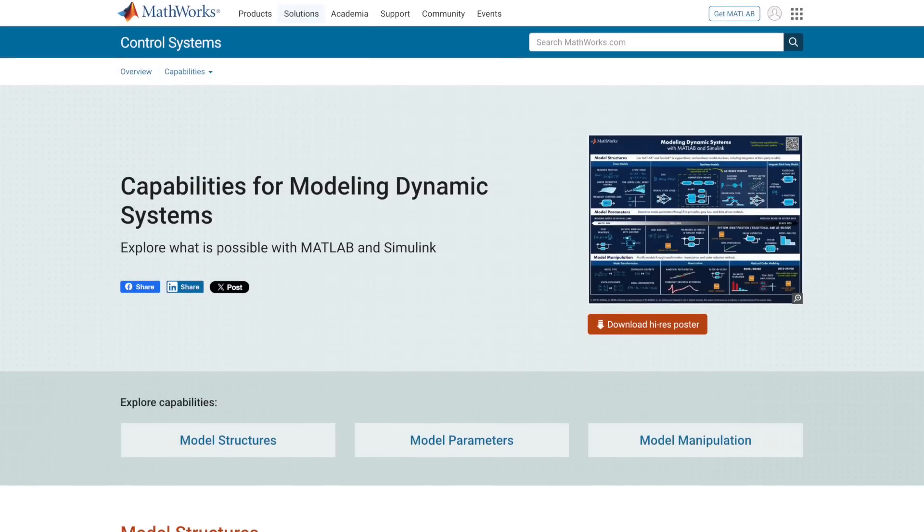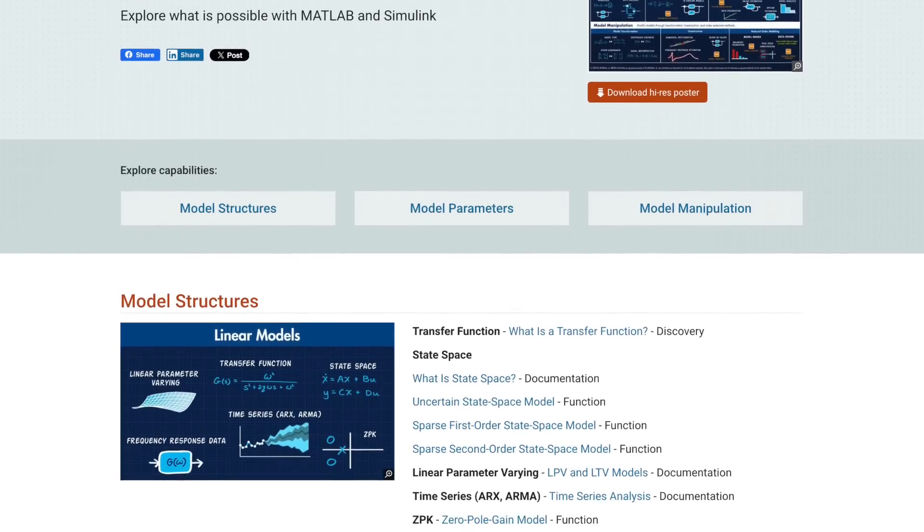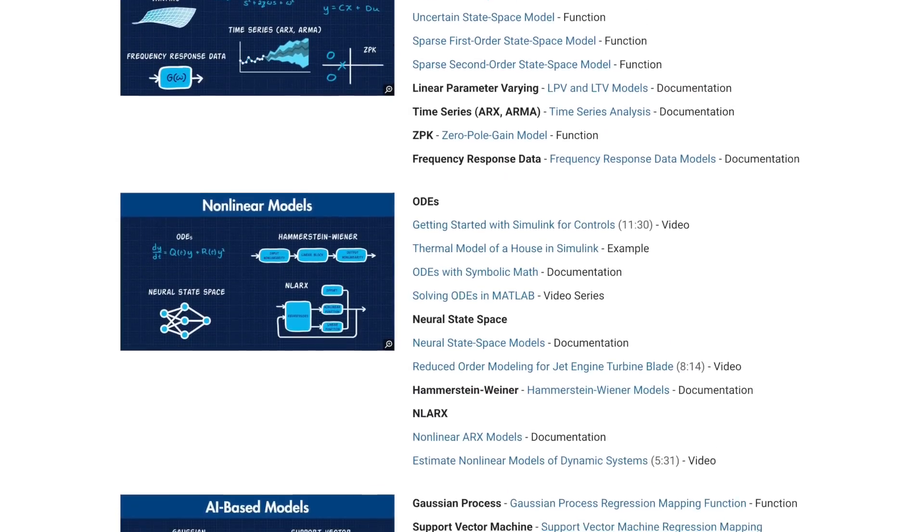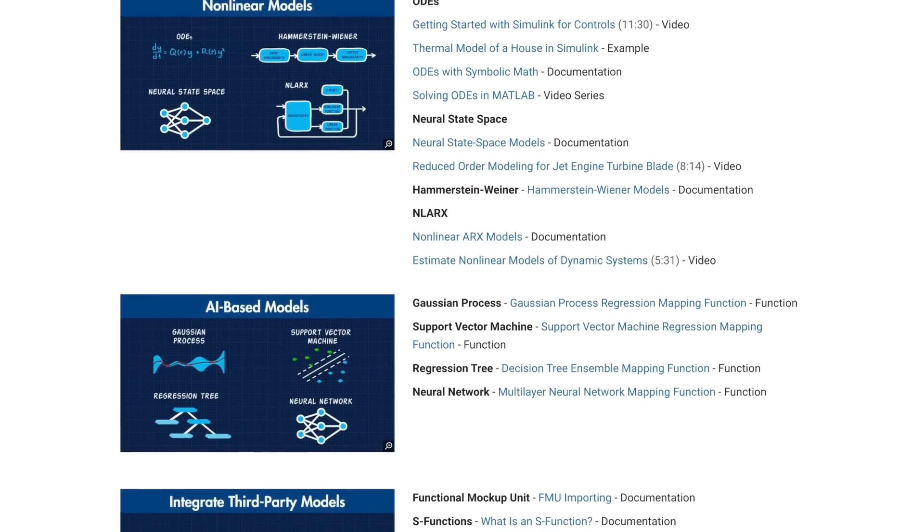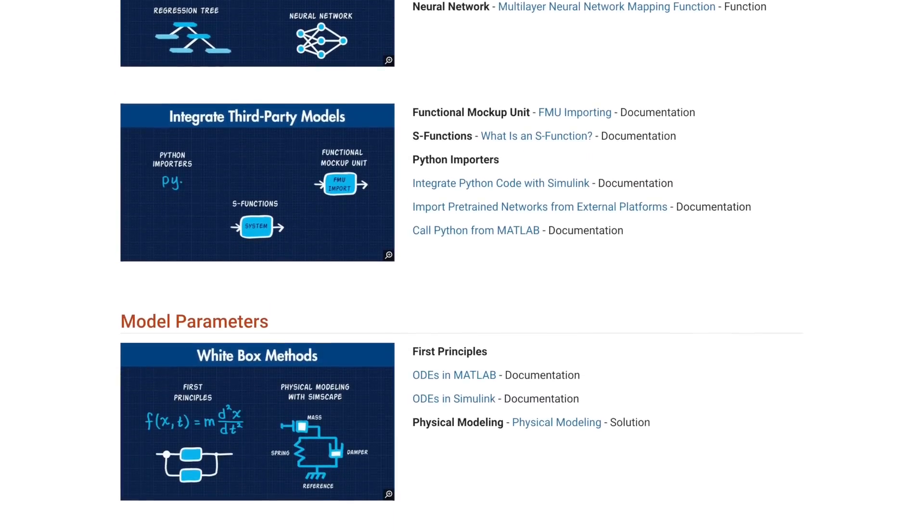If you want to learn more about anything that's on this map, as well as many other things that have to do with modeling dynamic systems, we've put together a page on mathworks.com that gives you more information on each of these topics. There's a link to it down below, but also the QR code at the top of the map will take you here as well. It's got tons of great information, so I hope you check it out.